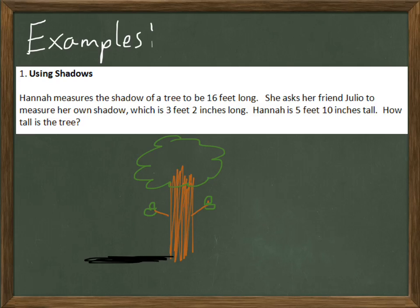She asks her friend Julio to measure her own shadow, which is 3 feet 2 inches long. So here's her and her shadow. And she herself is 5 feet 10 inches tall. So let's put the measurements on there: 16 feet, 3 feet 2 inches, and 5 feet 10 inches. What are we trying to find? We're trying to find the height of the tree. So the height of the tree there is going to be x.